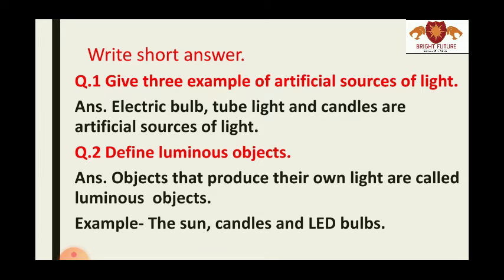Question number one: Give three examples of artificial sources of light. Answer is: electric bulb, tube light, and candles are artificial sources of light. Electric bulb runs on electricity, tube light also runs on electricity, and candles are made from wax. These are all artificial sources of light.